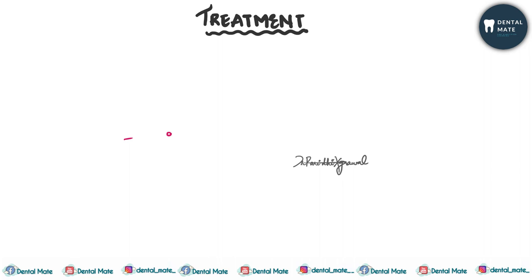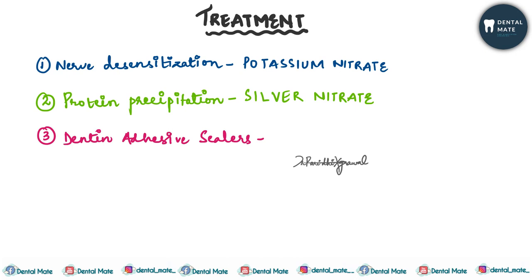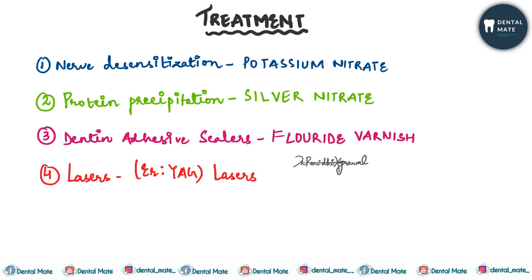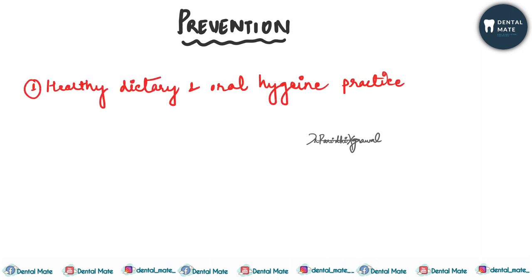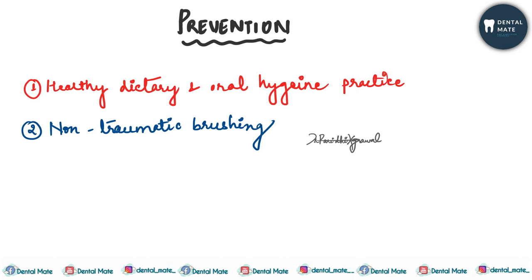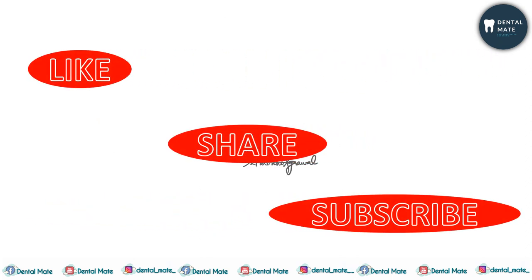For treatment, desensitization can be performed with potassium nitrate; protein precipitation can be done with silver nitrate; dentine adhesive sealers such as fluoride varnishes can be used; and lasers can also be practiced. For prevention, gingival recession and cervical tooth wear can be avoided through healthy dietary and oral hygiene practices, non-traumatic brushing technique to prevent receding gums, and limited acid consumption to prevent erosion of the enamel.